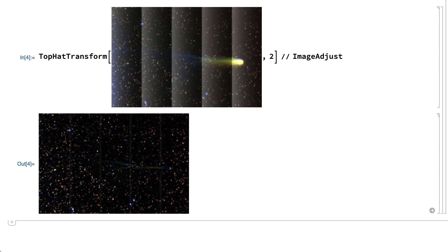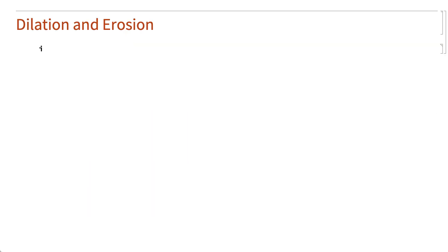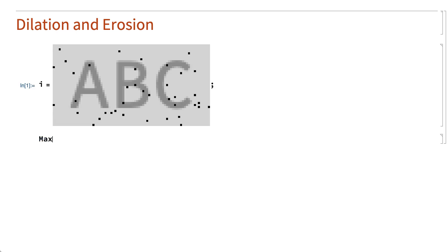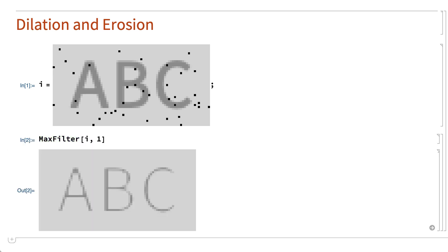What all of these operations have in common is that they all work by considering simple relationships between neighboring pixels. One of the simpler morphological operations is the maximum filter, which is implemented in a function called maxfilter, and which is used here to remove the black noise pixels from an image. The maximum filter works by replacing each pixel with the lightest nearby pixel.